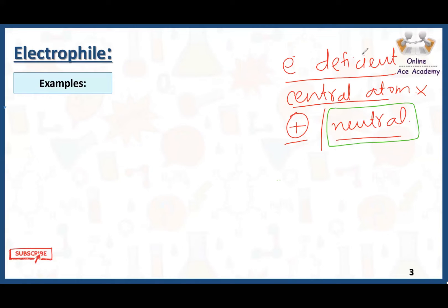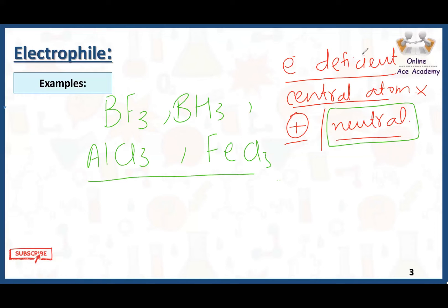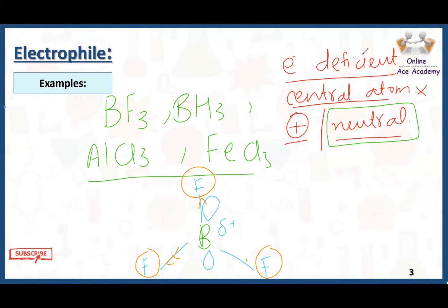There are also some neutral species that act as electrophiles — for example, BF3, BH3, AlCl3, FeCl3. These are all neutral species but still act as electrophiles. Looking at the structure of boron trifluoride, the p orbital of boron is vacant. Boron has a partial positive charge because the fluorines are highly electronegative and attract electrons towards themselves, giving them negative charge and leaving boron with a positive charge. Boron's octet is also not complete, which is why boron trifluoride acts as an electrophile.